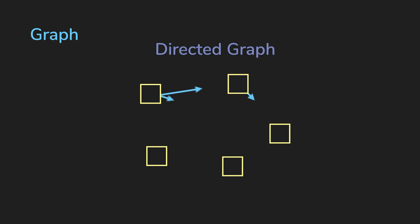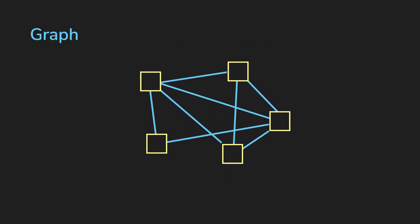And this would be a directed graph, or digraph for short. There's a reason why we use graphs to store data. It allows us to understand relationships between entities.